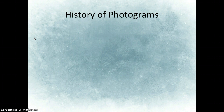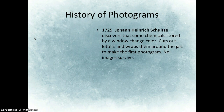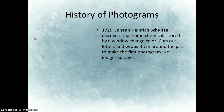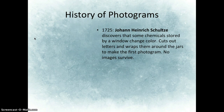Let's talk about the history of photograms, starting in 1725 with Johann Heinrich Schultz. He's a chemist — a scientist. He leaves some chemistry by the window, notices it changes, and decides to cut out letters from paper and wrap them around the jars. Essentially, he makes the first photogram. It's a bit of an experiment; photography didn't exist yet. The letter cutouts block the light from hitting the chemistry, and when he removes them, an image remains. No images survive this period, though — as soon as he mixed up the chemistry, the image went away.